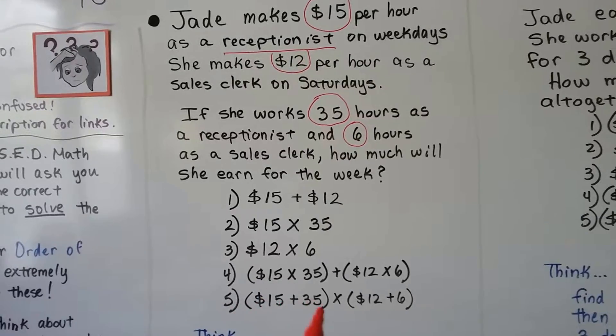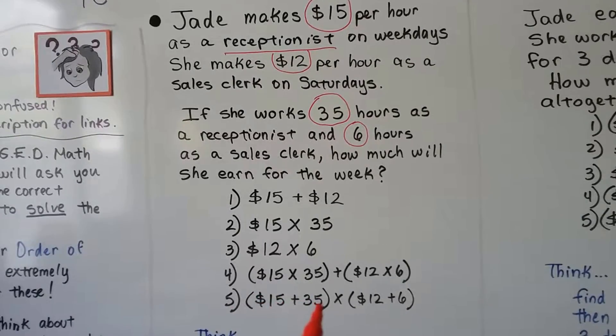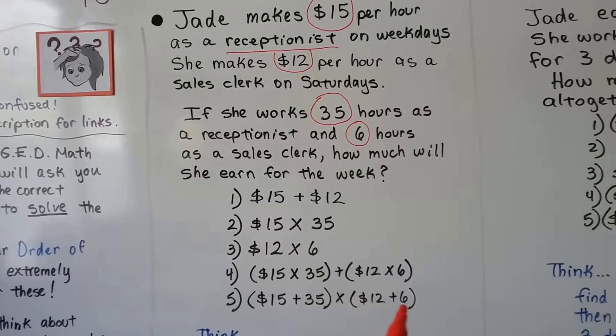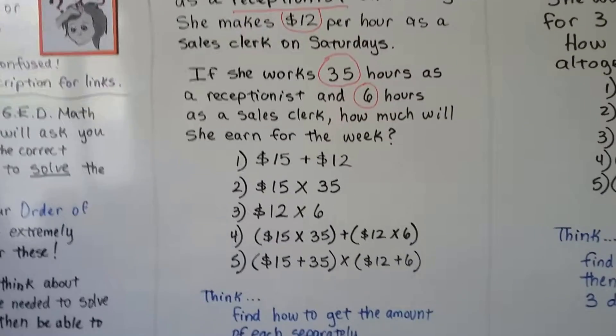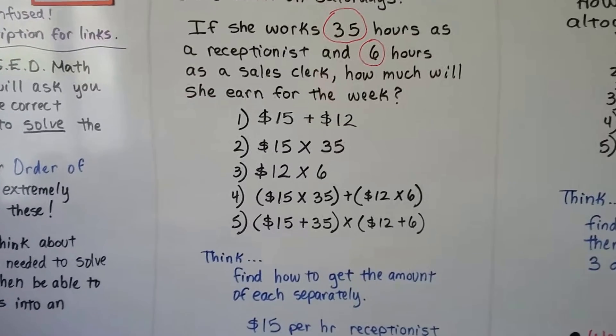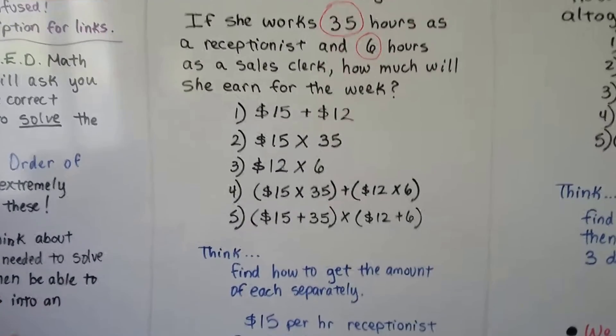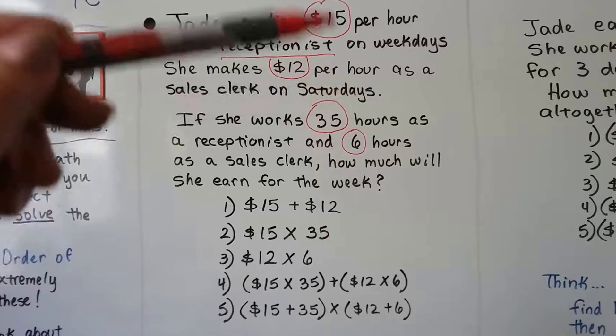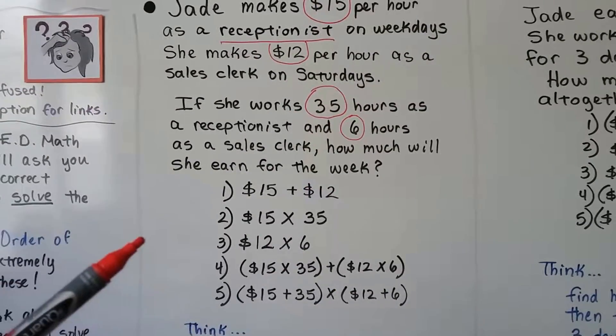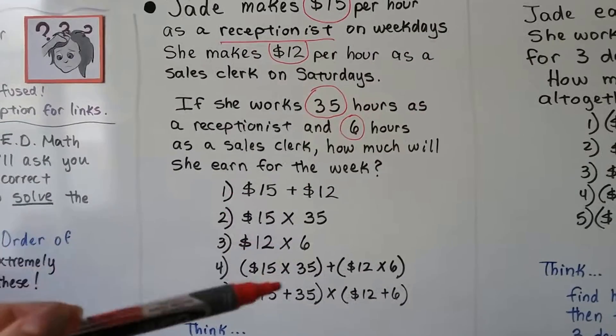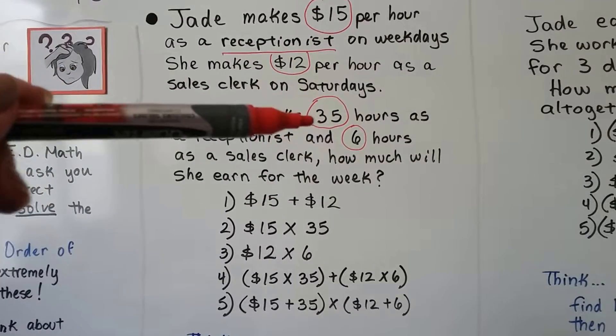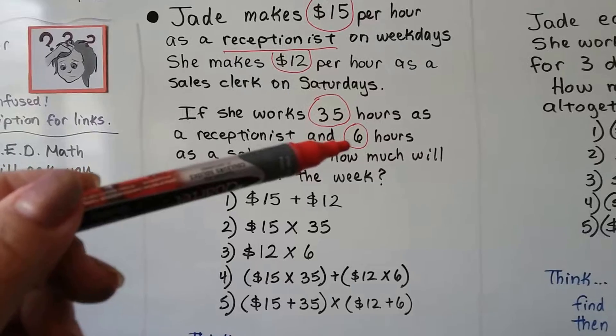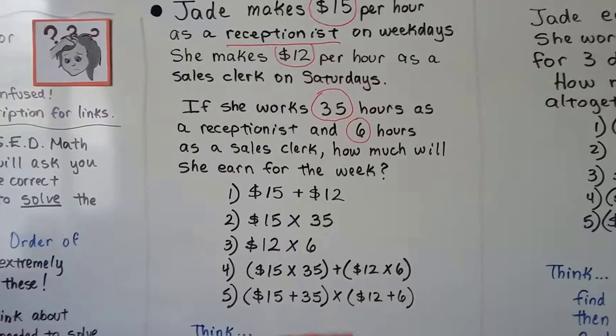Or should we add the 15 and the 35 hours, and the $12 an hour, and the six hours, and then multiply them? So we have to think. We need to find out how to get the amount of each separately. So we have to look at this as two separate problems. That's where parentheses can help us. So we know because we have two separate problems, the $15 per hour at 35 hours is the first one, and the $12 per hour at six hours is the second one.